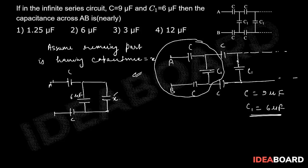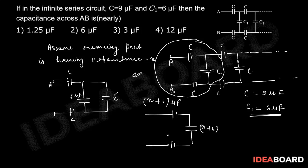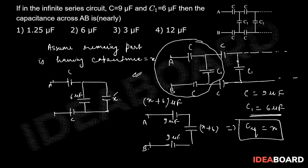The equivalent of X and C1 in parallel is X plus 6 microfarad. So our circuit now has: C (9 microfarad), then X plus 6, then another C (9 microfarad). The net equivalent capacitance of this entire combination must equal X, because this is just a part of the same infinite series.